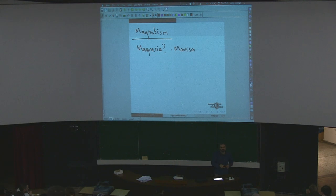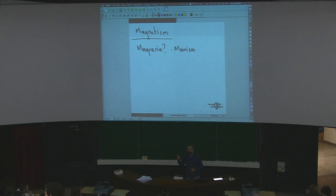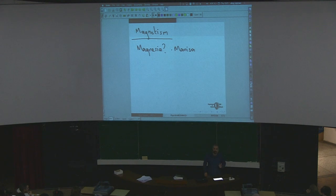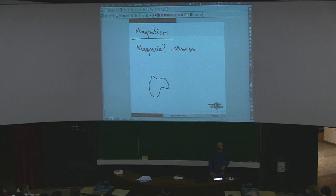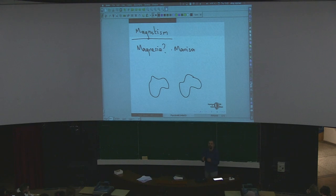When we started discussing electricity, we used a balloon to demonstrate a force. Today, unfortunately, I forgot to bring magnets. So let's just make some observations: I pick one rock from Magnesia and then another. When I bring them together, I observe that they push each other apart. How can we explain this? What forces do we know in this course?